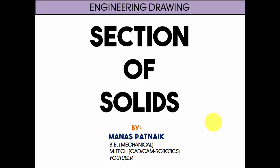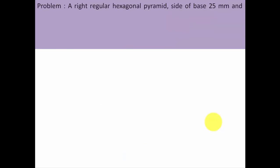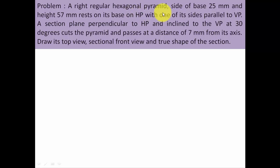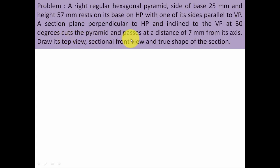Hi there guys, this is your friend and tutor Manas. In this video I'm going to tell you how the sectioning of a hexagonal pyramid can be carried out with an AVP - that's what you call an auxiliary vertical plane. The problem goes like this: a right regular hexagonal pyramid, side of base 25 mm and height 57 mm, rests on its base on HP with one of its sides parallel to VP. A section plane perpendicular to HP and inclined to the VP at 30 degrees cuts the pyramid and passes at a distance of 7 millimeters from its axis. Draw its top view, sectional front view, and true shape of the section.